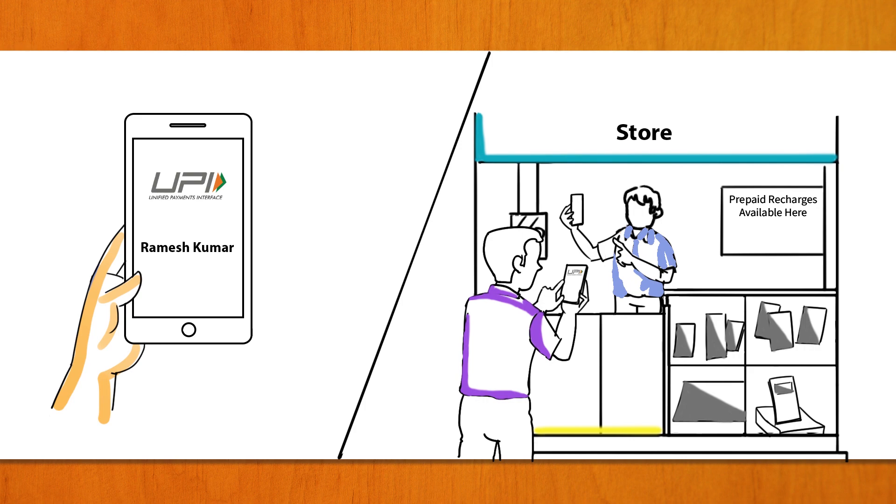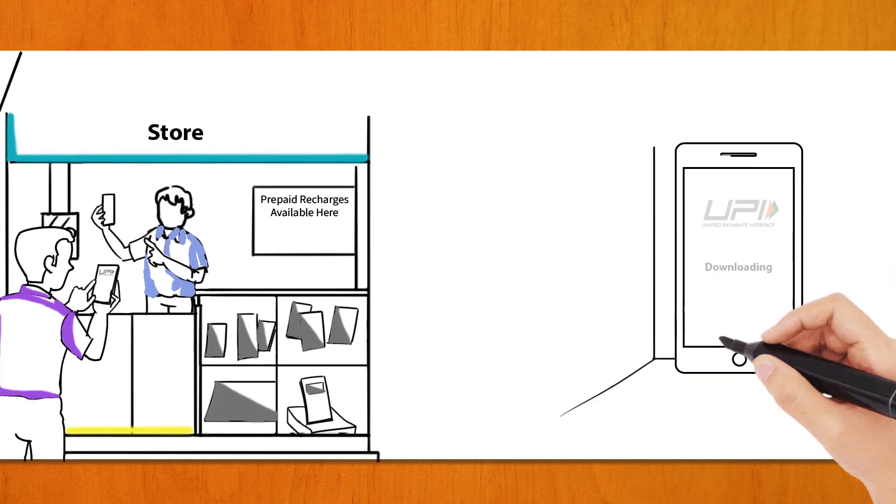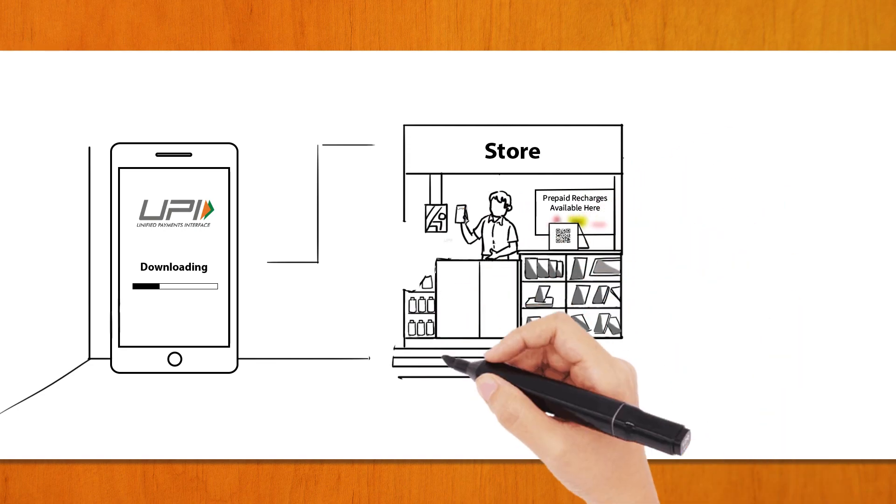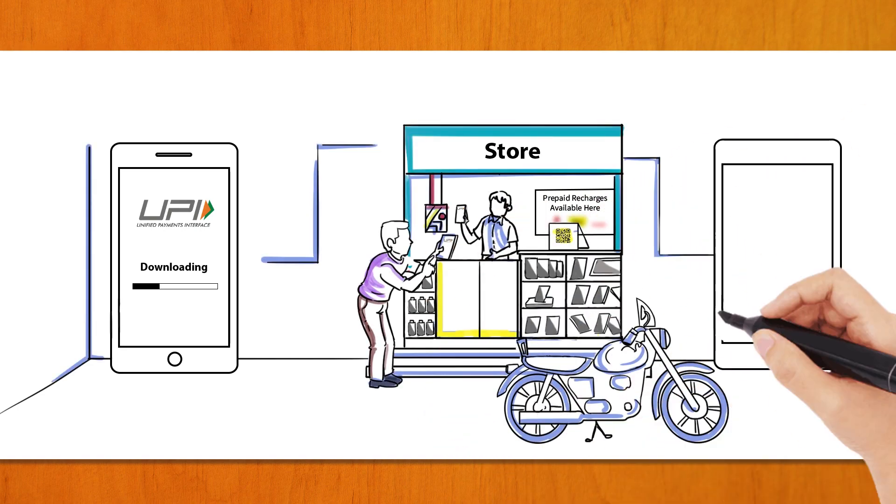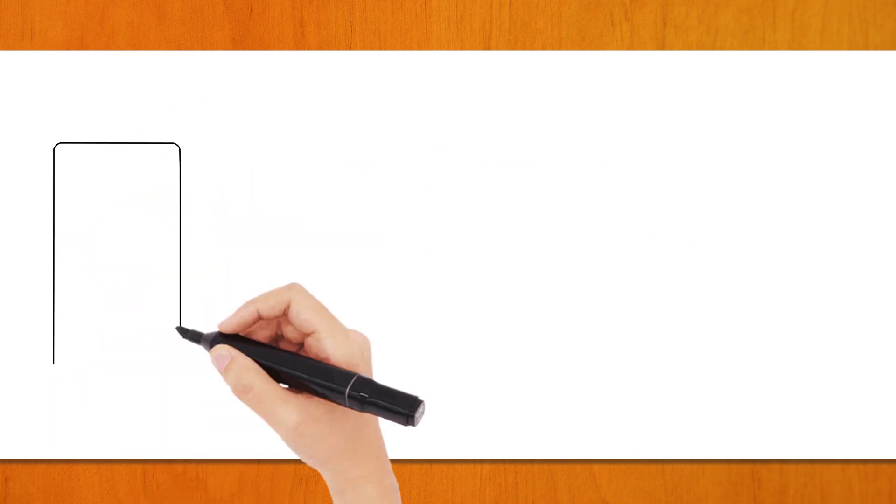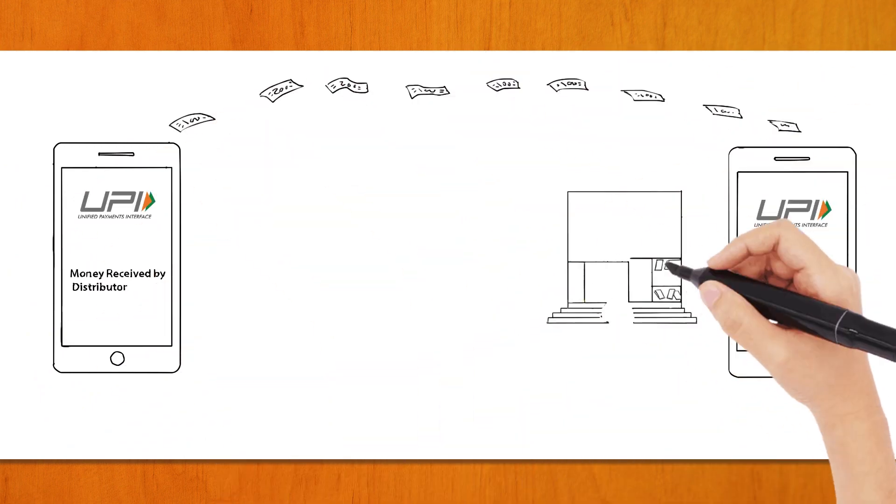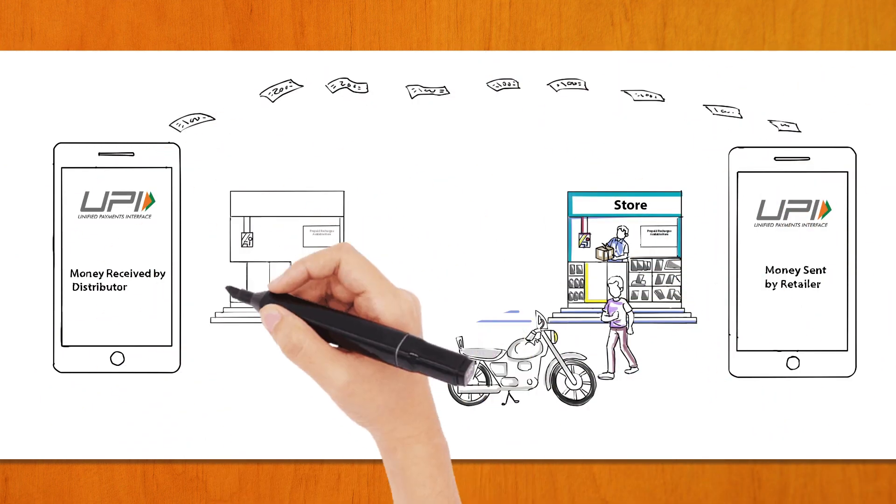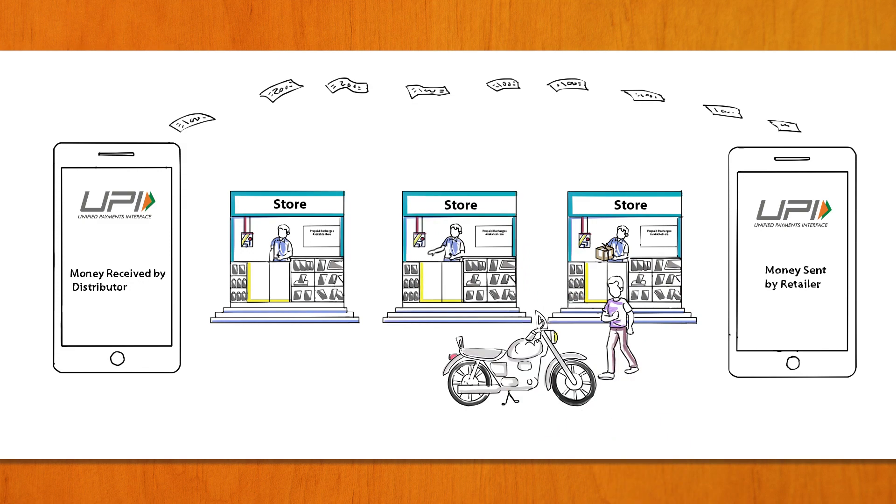linking it to their mobile numbers. Thus, the feet on street helps the retailers to download UPI and create their own UPI ID. The retailer can now make payments for recharges to the distributor through the retailer UPI ID and by scanning the feet on street QR code.